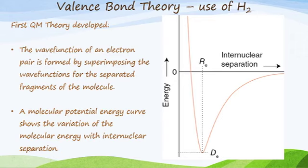Valence bond theory was the first quantum mechanical theory developed to describe bonding. It incorporated the wave functions of an electron pair that are formed by superimposing the wave functions for the separate fragments of the molecule. This means we're taking the wave function for two atoms, bringing them together, and when the wave functions overlap we add them together.